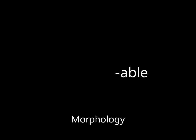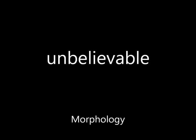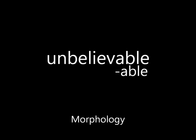Morphology describes the smallest units of meaning and how they combine to form words. For instance, 'unbelievable' is composed of three morphemes, each with their own meaning: 'un,' 'believe,' and '-able.'